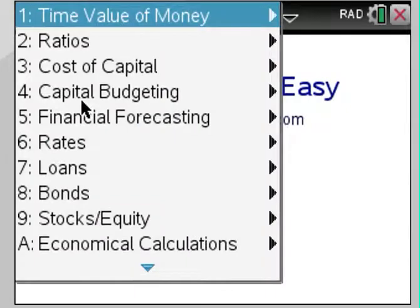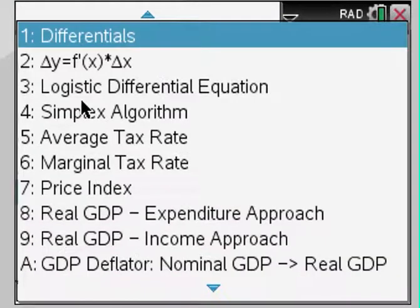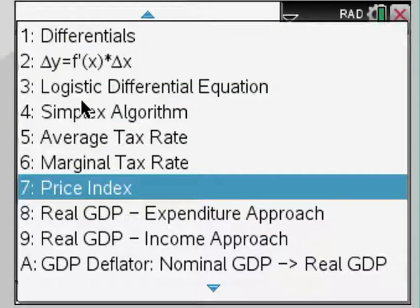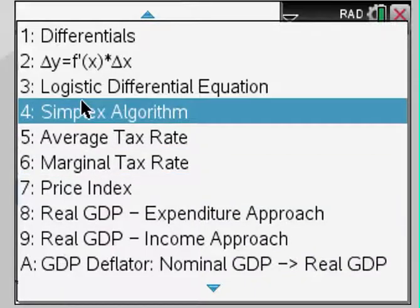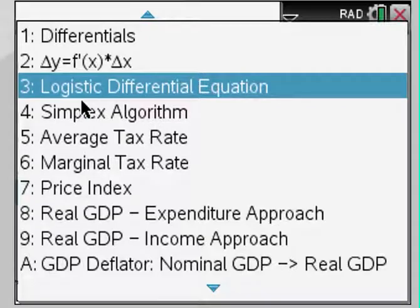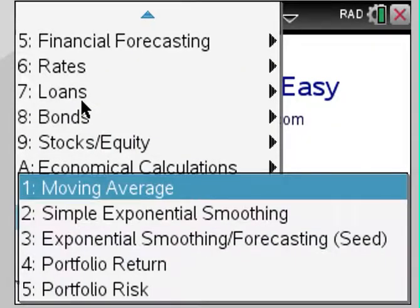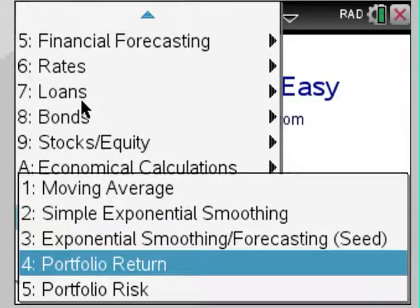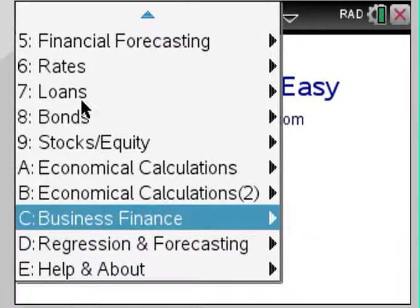So let's come to a conclusion. Just to give you an idea, there's more economical calculations. All the GDP computations can be done here. Tax rates, even simplex algorithm, logistic differential equation. As I told you before, it's a massive app. Business finance, portfolio computations, risk and return can be computed, even smoothing methods and moving averages can be computed. And lastly, regression, linear regression, quadratic regression, any regressions that you may ever need in your class.